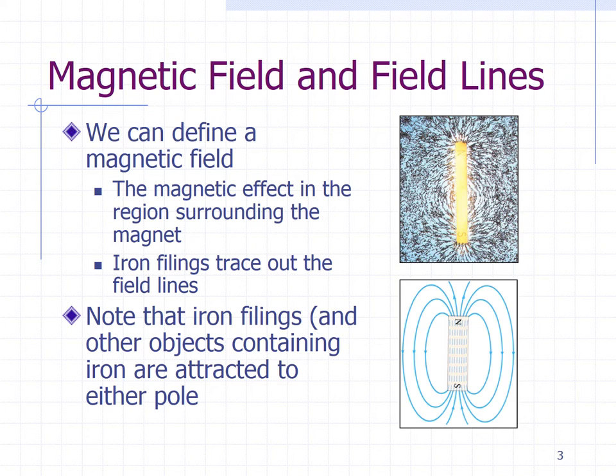Okay and notice that the iron filings are attracted to both positive and negative. So even though magnets themselves we know that two north poles or two south poles repel each other. So like poles repel, unlike poles attract. A non-magnetized or an unmagnetized iron filing will be attracted to each pole.